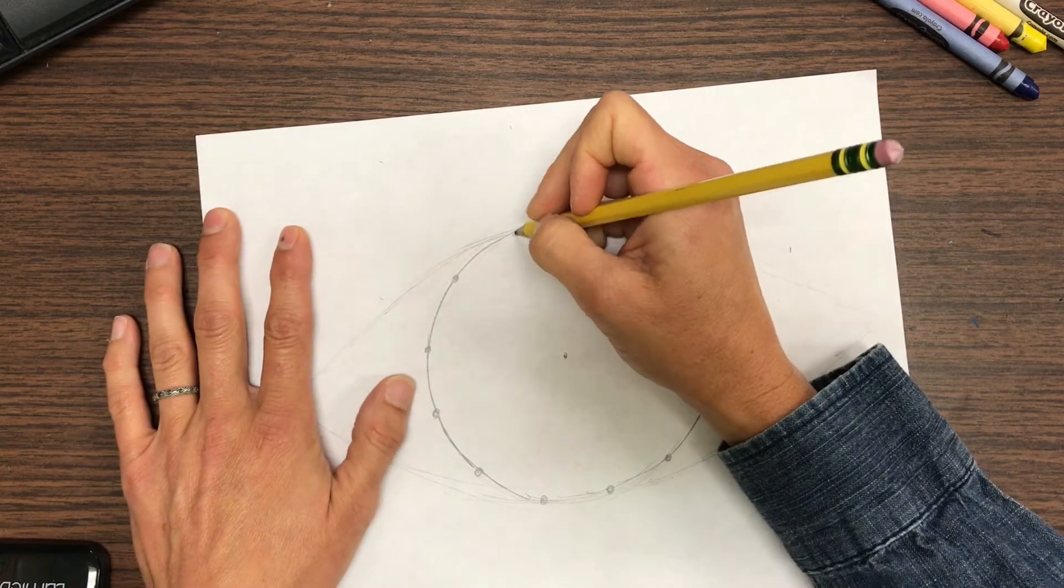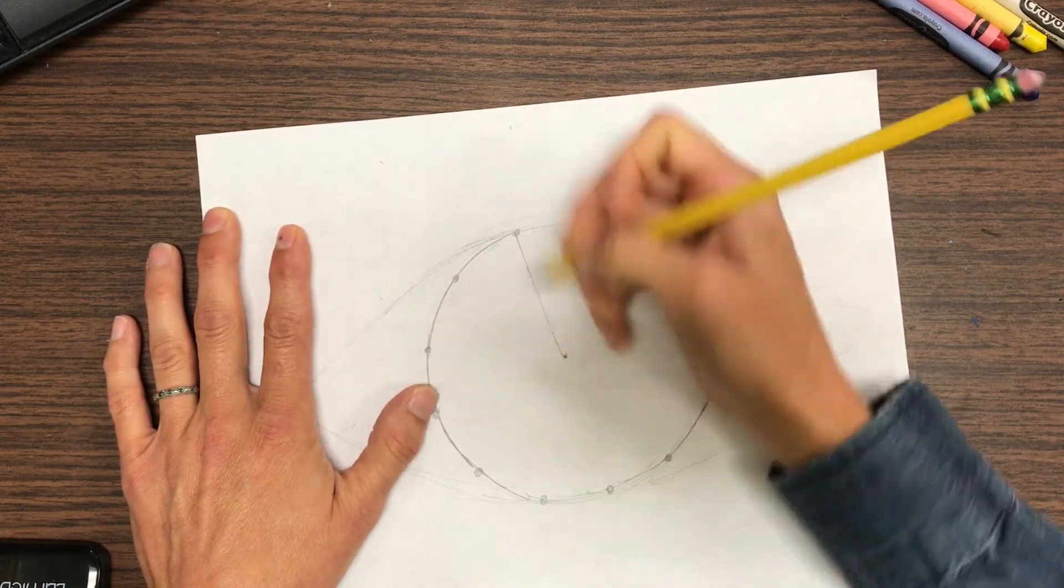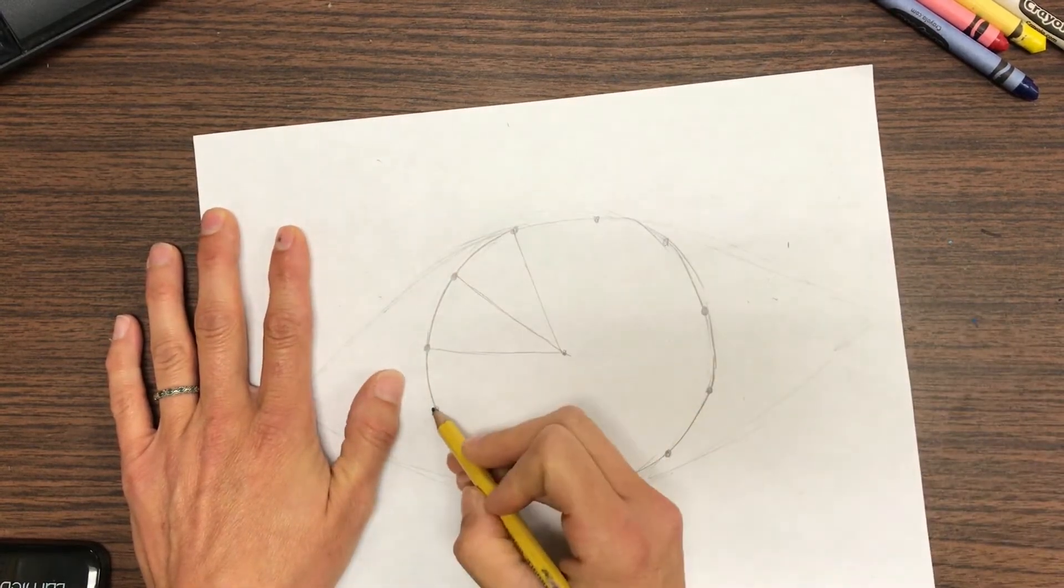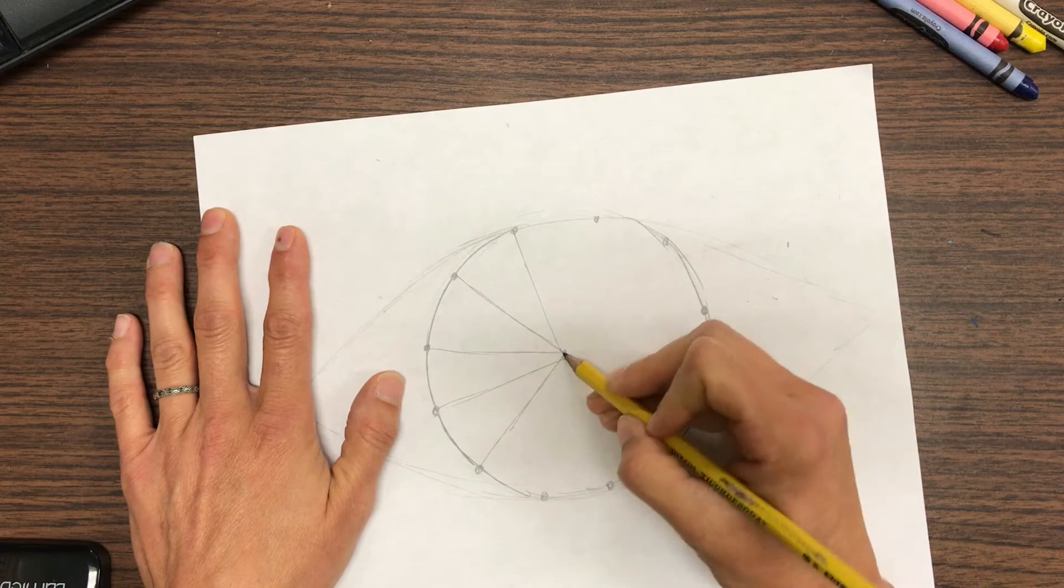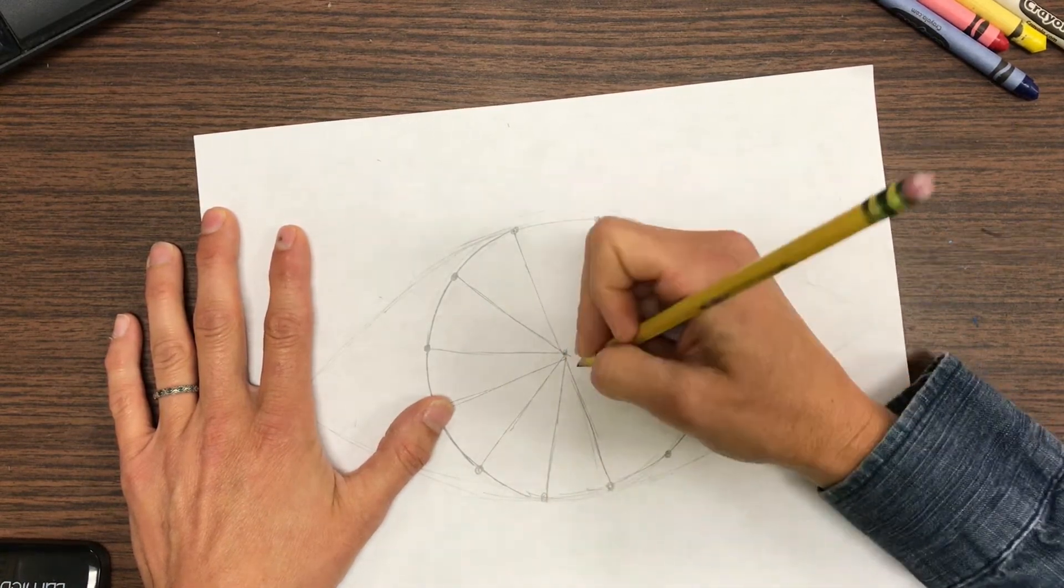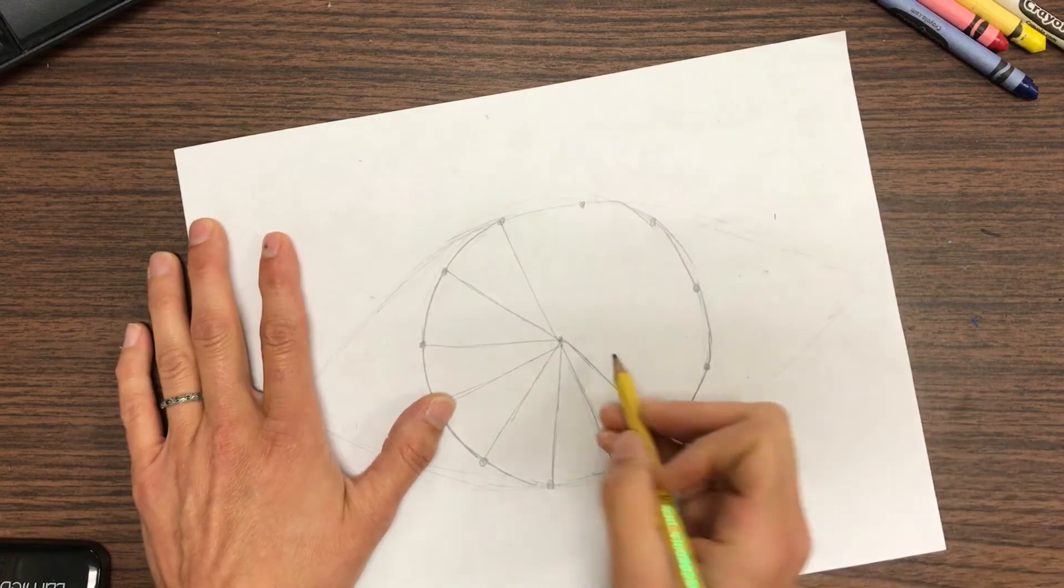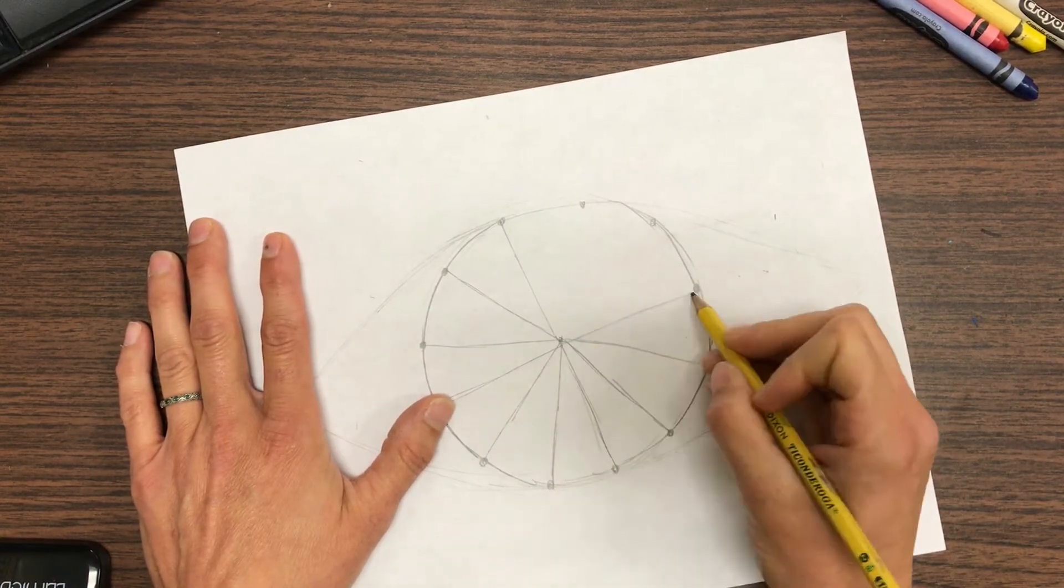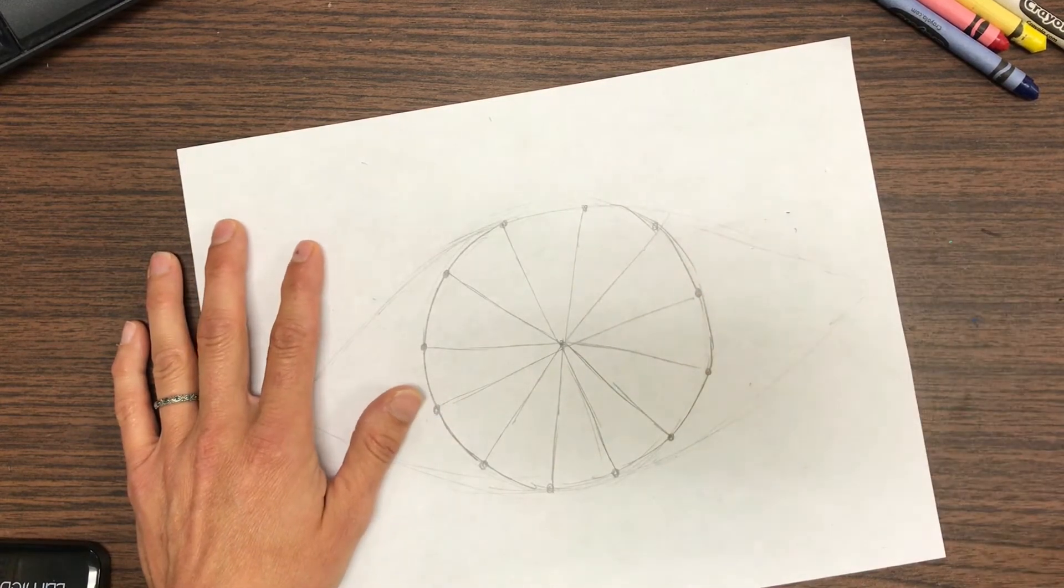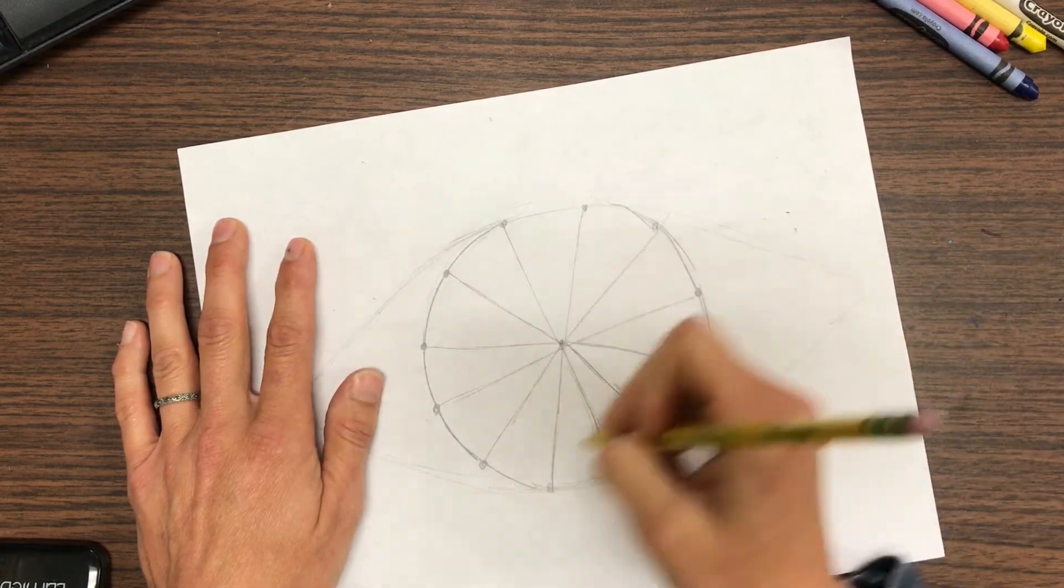Now I'm just going to lightly draw a line from each dot to that center dot. One, two, three, four, five, six. Notice some of them are smaller and that's okay. Seven, eight, nine.